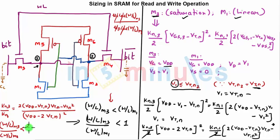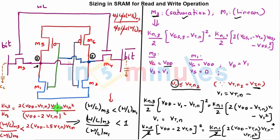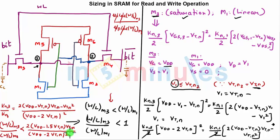Simplifying further, 2(VDD − VTN)·VTN − VTN² = 2VDD·VTN − 2VTN² − VTN² = 2VDD·VTN − 3VTN². With VDD − VTN ≈ VDD − 1.5·VTN for a typical approximation, this reduces to: W/L of M3 upon W/L of M1 < 3VTN² / (VDD − 2VTN)². This is the final sizing constraint for the read operation.